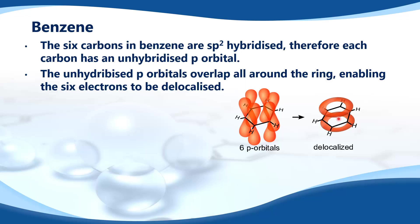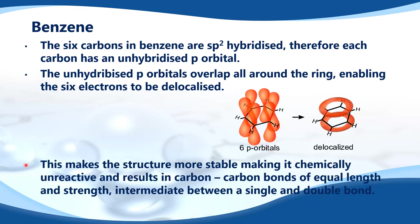This results in two clouds of electron density, one above and one below the plane of the ring. This makes the structure more stable, making it chemically unreactive, and results in carbon-to-carbon bonds of equal length and strength which are intermediate between a single and a double bond.